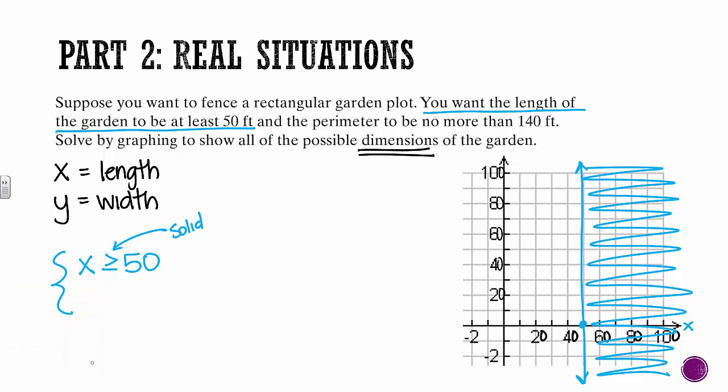And our second equation says that we want the perimeter to be no more than 140 feet. Now remember, perimeter is adding up everything. So when we're talking about x's and y's, we have 2x's and 2y's. That will add up to our perimeter. So that's our equation. 2x plus 2y. And instead of equals, we want no more than 140 feet. So we want it to be less than or equal to 140.